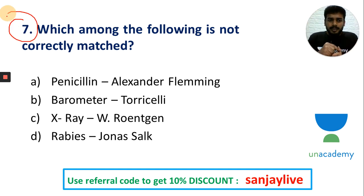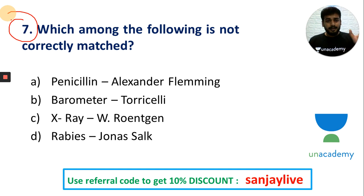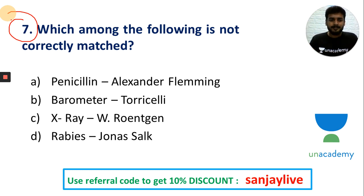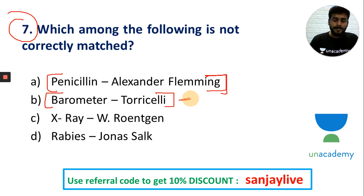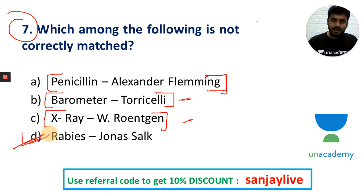Next question: which of the following is not correctly matched? The study of disease is called pathology. The barometer is connected to Torricelli — it measures air pressure. X-ray was discovered by Wilhelm Röntgen. These are invention/discovery matching questions.